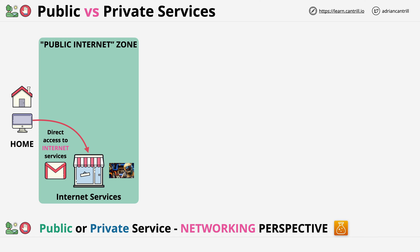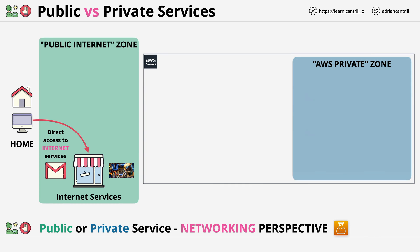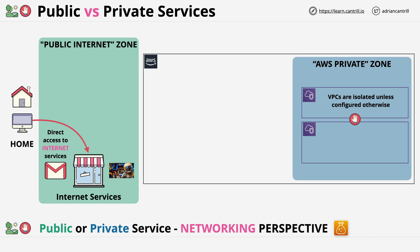AWS also has private zones, and these are called Virtual Private Clouds or VPCs. These are isolated — VPCs can't communicate with each other unless you allow it, and nothing from the internet can reach these private networks unless you configure it. Services can be placed into these private zones, such as EC2 instances. Just like with your home network, it can only access the internet, and the internet can only access it, if you allow and configure it.